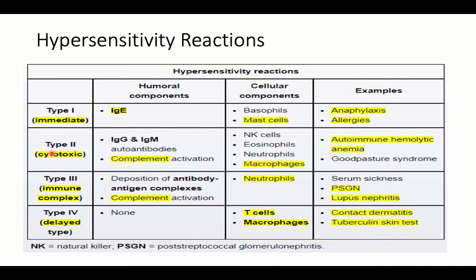Type 2 is the cytotoxic hypersensitivity reaction, mediated by antibodies and complement activation. Classic examples include mismatched blood transfusion and autoimmune hemolytic anemia. Type 3 is the immune complex hypersensitivity reaction, characterized by antigen-antibody immune complex formation that fixes complement. Consumption of complement during the reaction causes low complement levels.